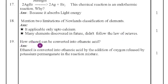Nineteenth question. How ethanol can be converted into ethanoic acid? Ethanol is converted into ethanoic acid by the addition of oxygen released by the potassium permanganate in the reaction mixture.